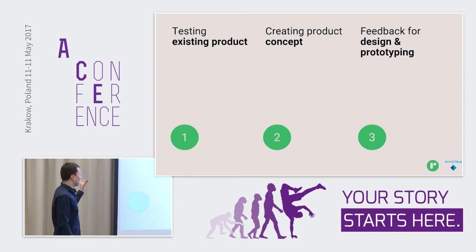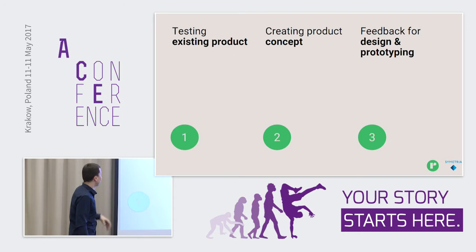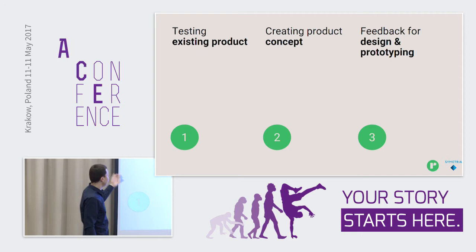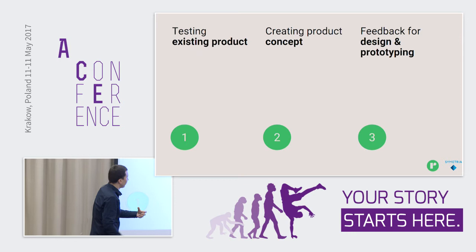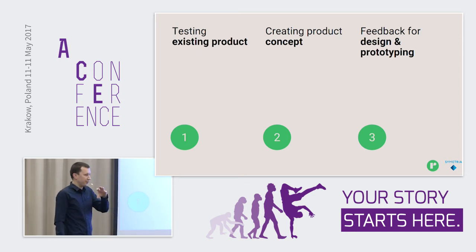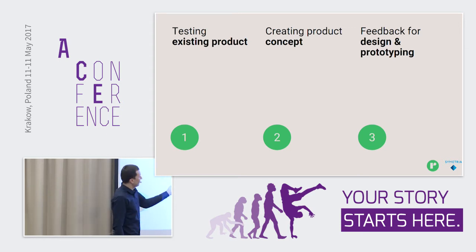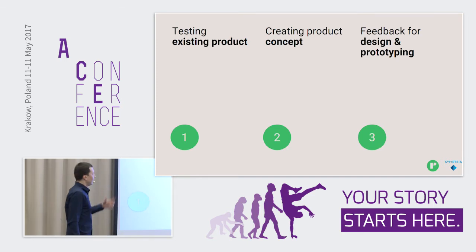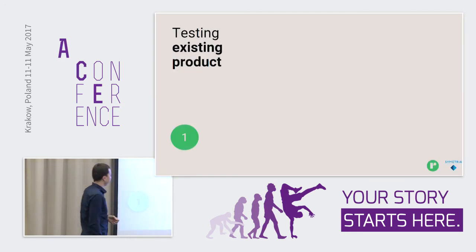I'm going to show you three cases and ways to solve this. We'll think about: what if we have an existing product and want to test it with users really quickly? What if we want to build a concept of a new product or understand if there's a need for a new feature? And if we know there's a need and we've started to design and prototype, how can we build a feedback loop with users?